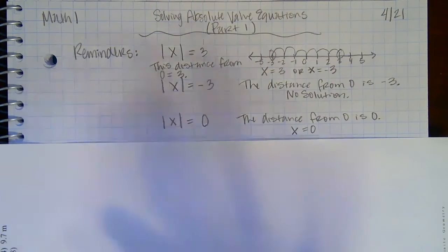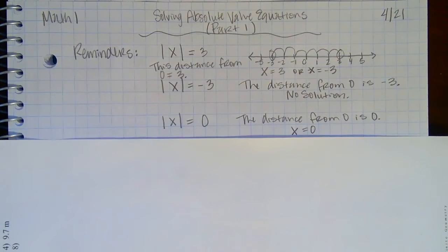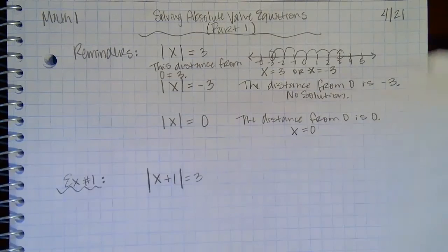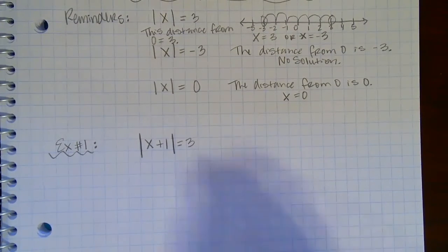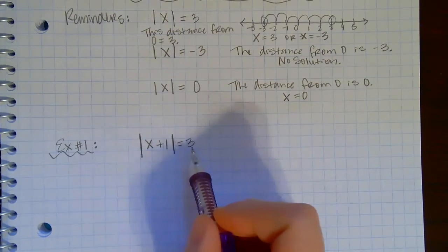Okay, so just some quick reminders before we get started. Other than that, it should be pretty basic. Okay, so let's look at our example for today. I'm just going to do one example here. So you'll notice it says absolute value of x plus 1 equals 3.